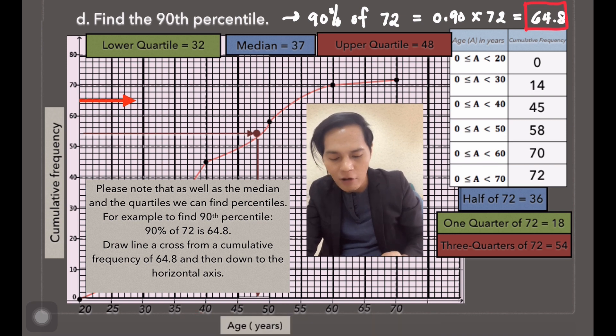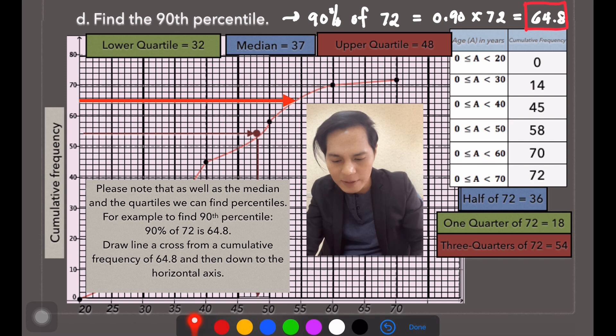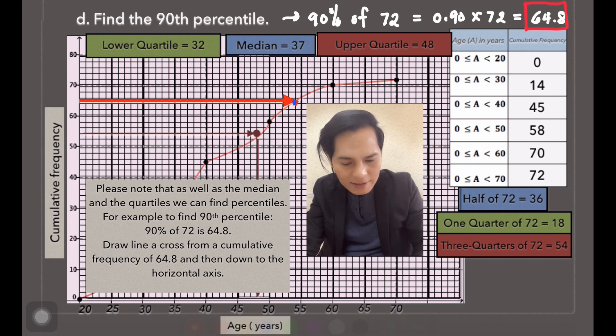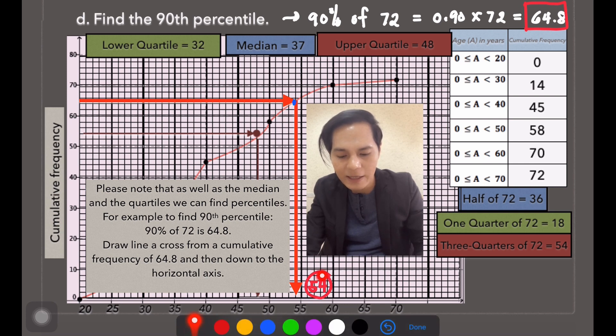Okay, draw a line across from the cumulative frequency, the same thing that we have done before. So there you go, that's 64.8. Then down the horizontal axis, the value there is 54. Therefore, our 90th percentile is 54.